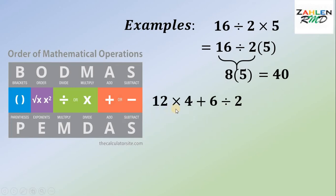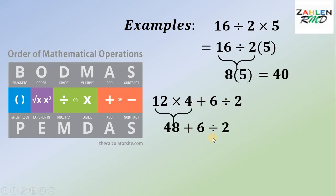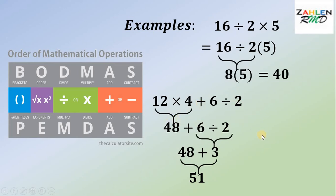Let's have another example: 12 times 4 plus 6 divided by 2. We do operations from left to right. We have multiplication, addition, and division — but multiplication and division come before addition and subtraction. So we do multiplication first: 12 times 4 gives us 48, then bring down plus 6 divided by 2. Division comes before addition: 6 divided by 2 gives us 3. Finally, 48 plus 3 gives us 51.